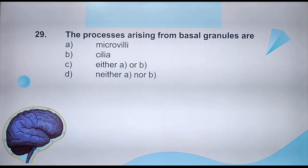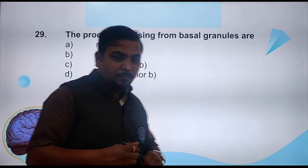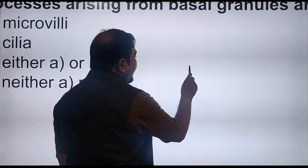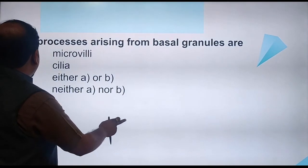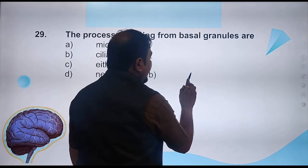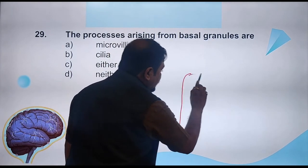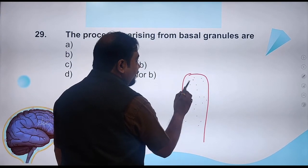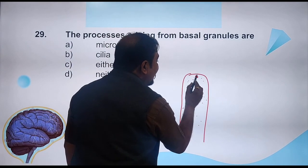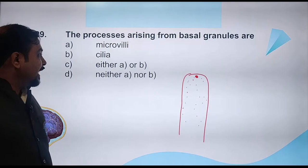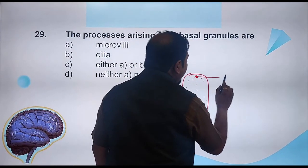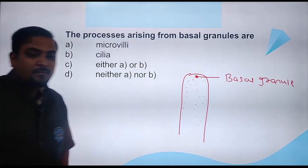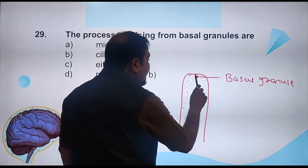Question 29: The processes arising from basal granules. Think of the cell — inside the cell is your protoplasm, which is the living substance of the cell. At the peripheral part, corner of the protoplasm, there are centrioles. These centrioles are called basal granules. From these basal granules, finger-like projections emerge outside.